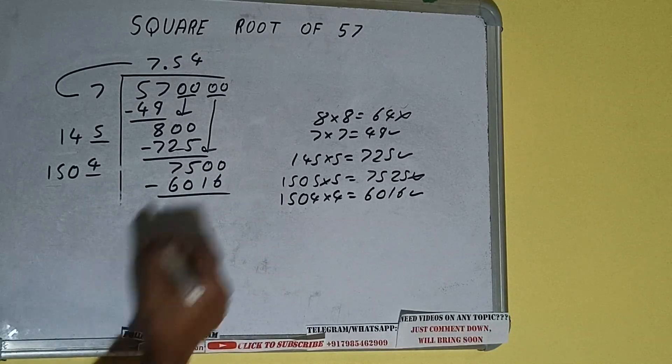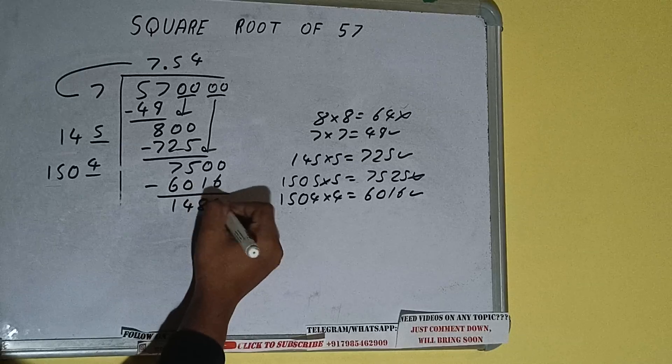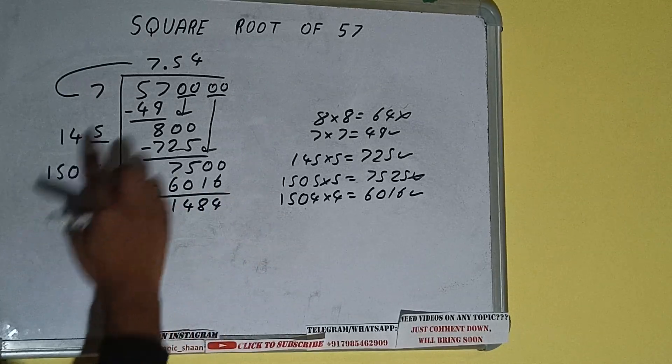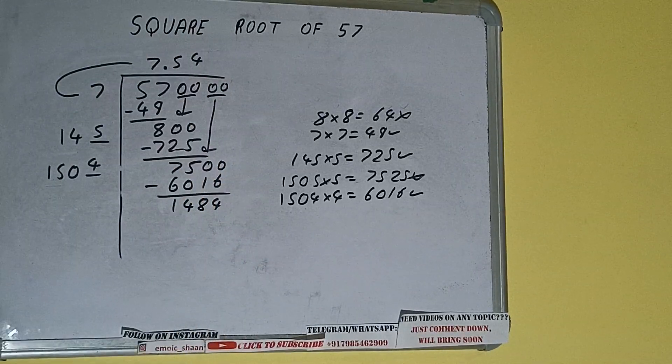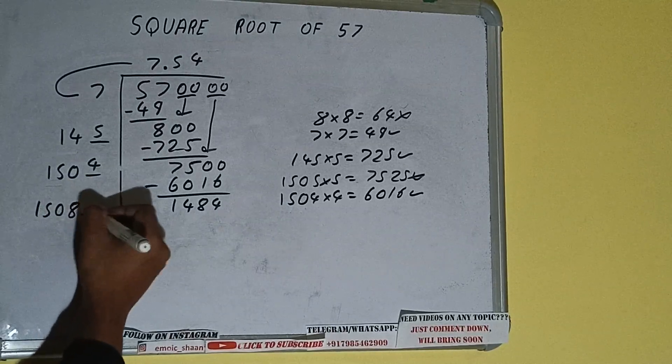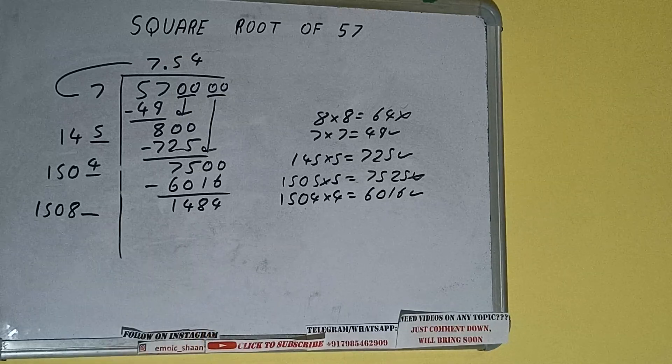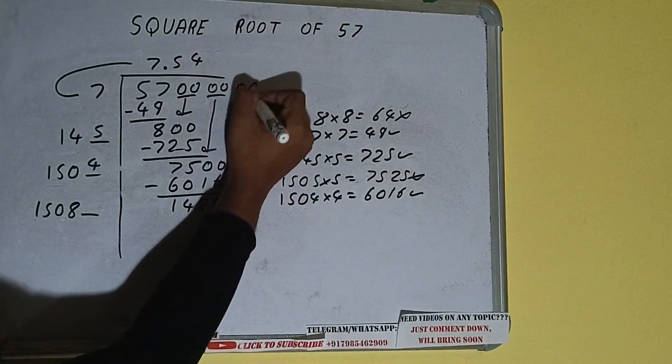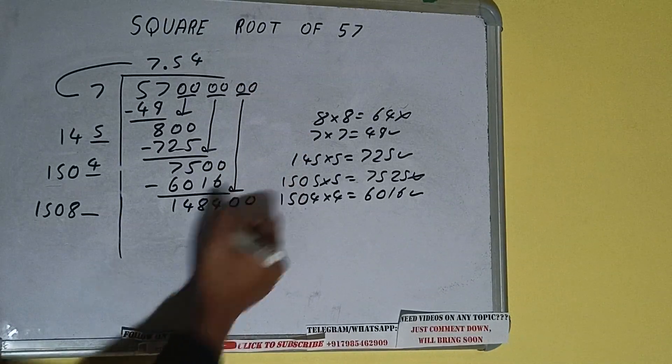So 4 here and 4 here, 6016, subtract, and we'll be having 1484. Now 1504 into 4 we did, so add both. 1504 plus 4 will be 1508 and one digit extra. This number we need to make it big, so bring the next pair of zeros down and it will be 148400.